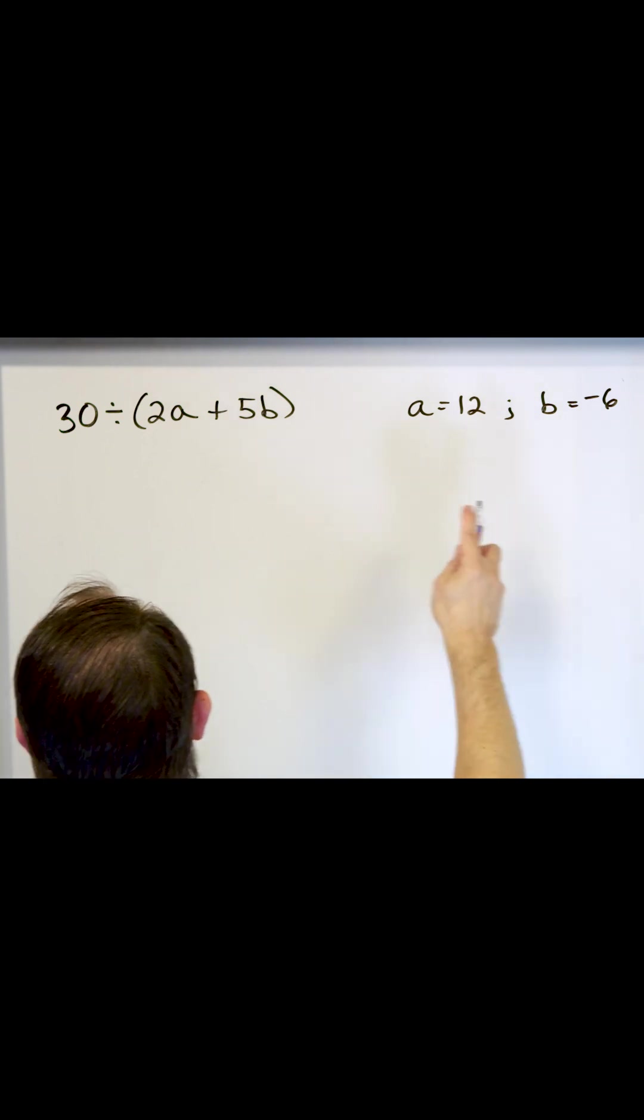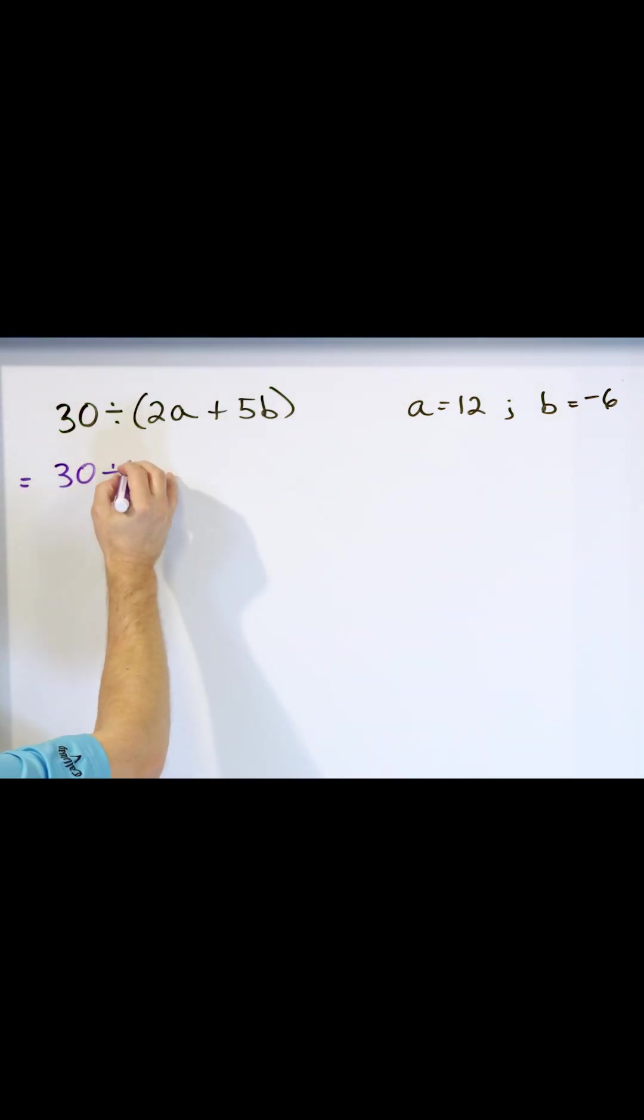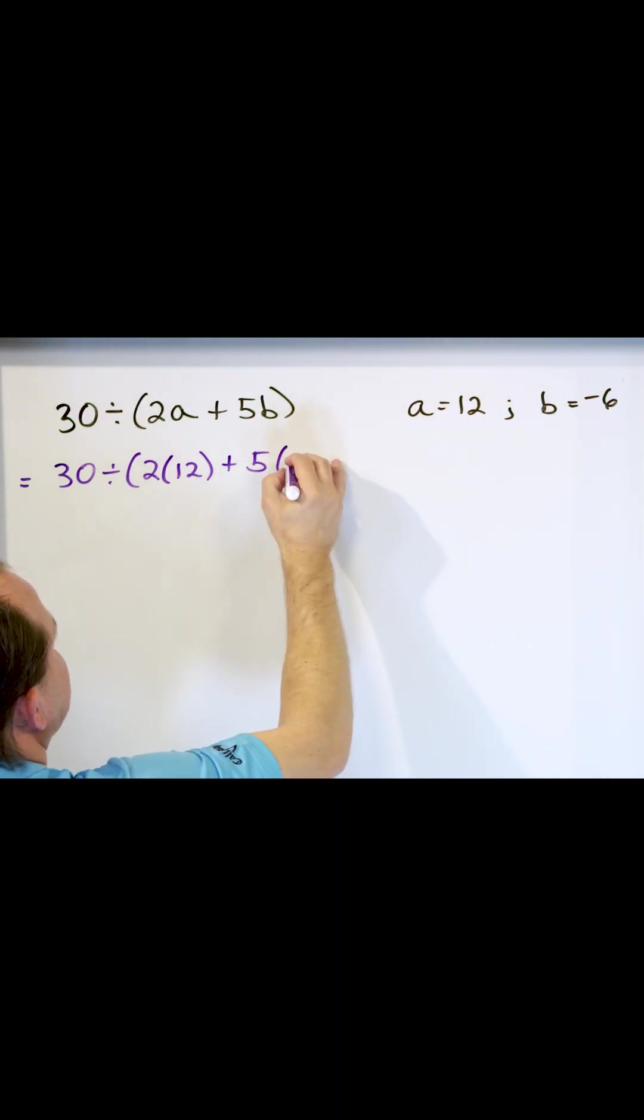So we're going to put those in the proper locations here. Here we have 30 divided by, this is 2 times A, so I'm going to put 2 times 12 here, and then plus 5 times B. B is negative 6, so I'll put a negative 6 right here and I'll close the outer parentheses.